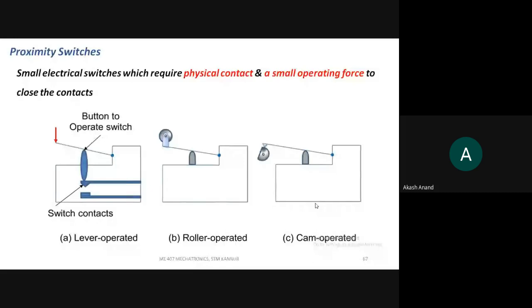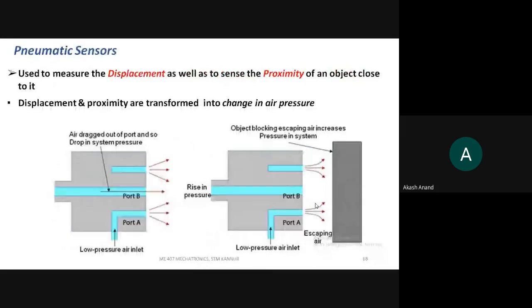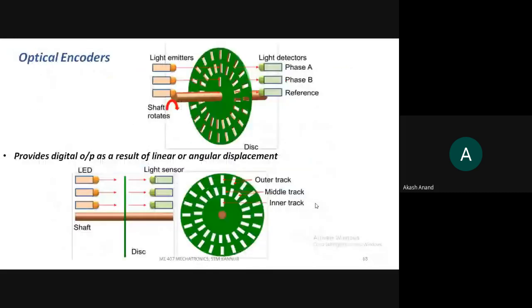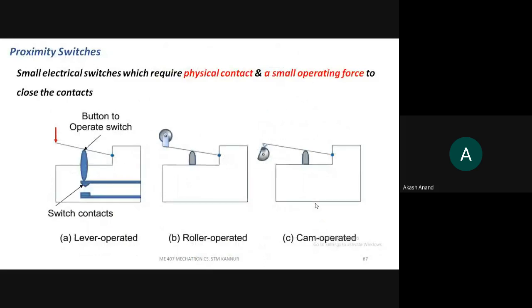With the help of these sensors, a proximity switch is created. It is a small electrical switch which requires physical contact and a small operating force to close the contact. It is used in robotic arms with a different operating mechanism.